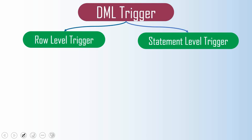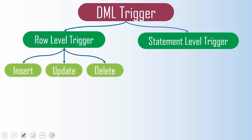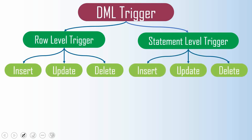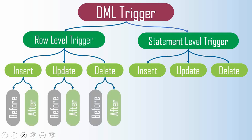The statement level trigger fires once for the statement being executed, whereas the row level trigger fires for every row that is affected. Since it is a DML trigger, these two types are further classified based on the DML operation: insert, update, or delete — at both the row level and statement level. Further, these DML operations are also classified based on whether the trigger fires before or after the DML operation, giving us before triggers and after triggers.